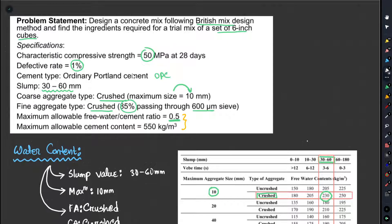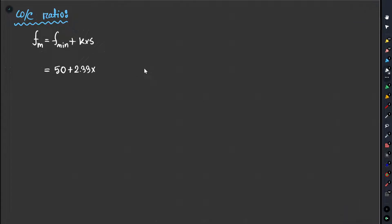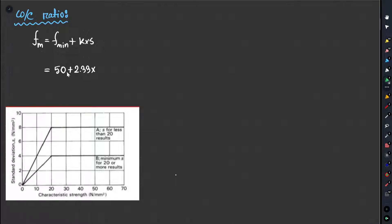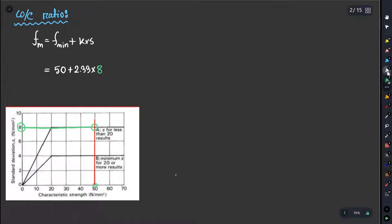We count using the previous data from the chart. This chart shows the standard deviation values. We use the 5-chart data and, going conservatively to the left, we will not change. So FM is called 8126 MPa.